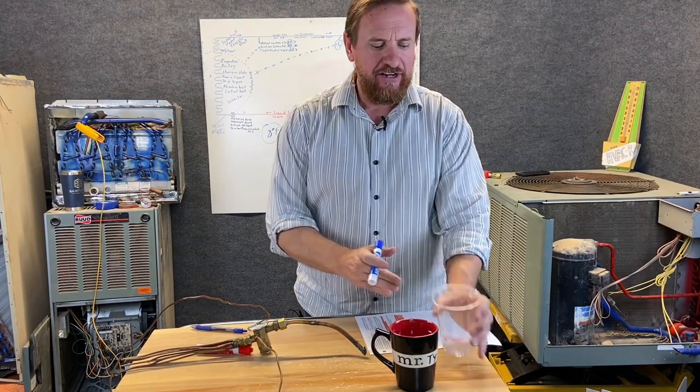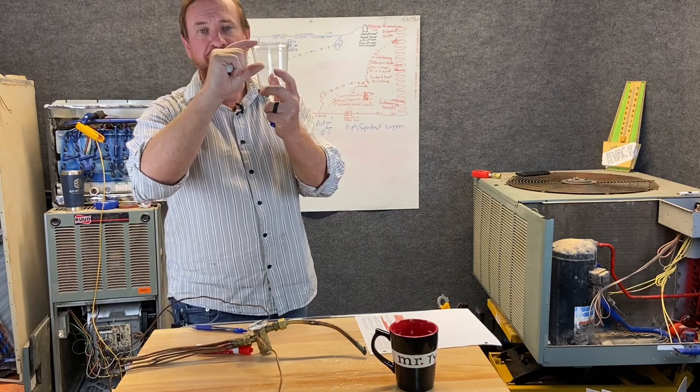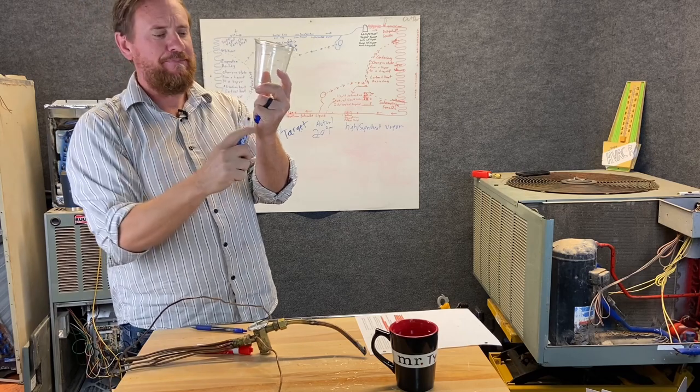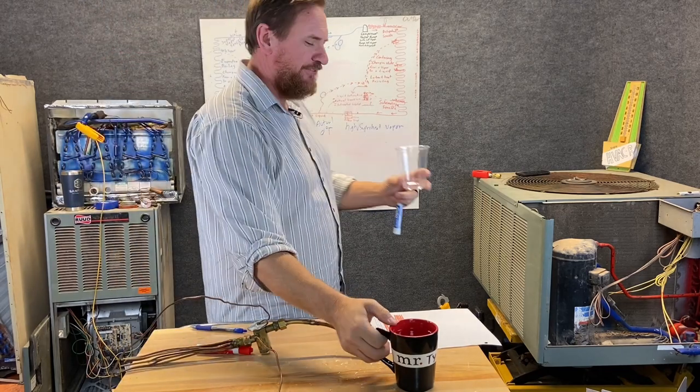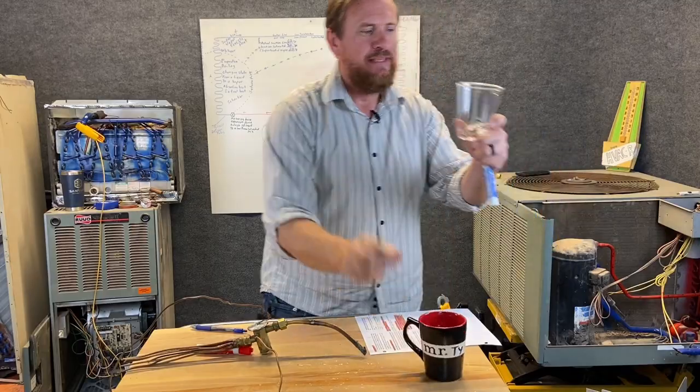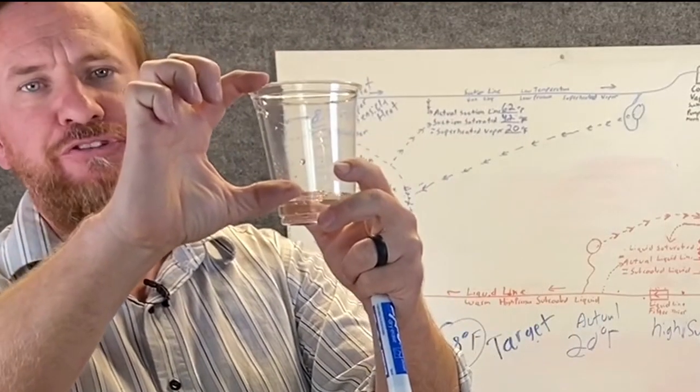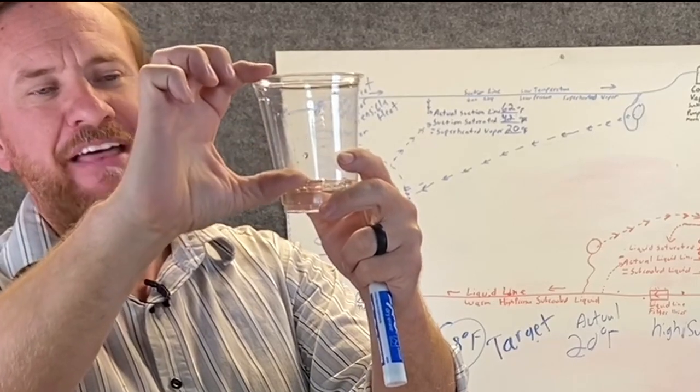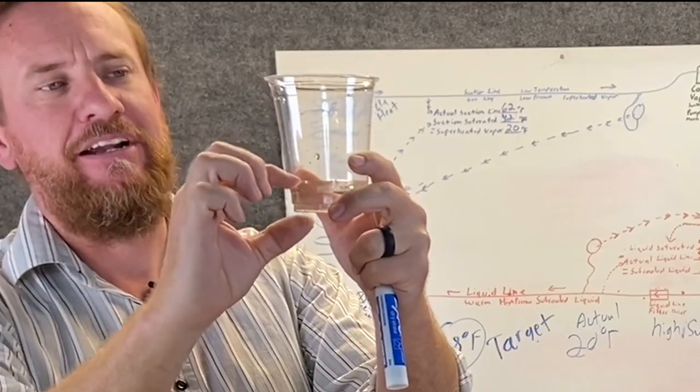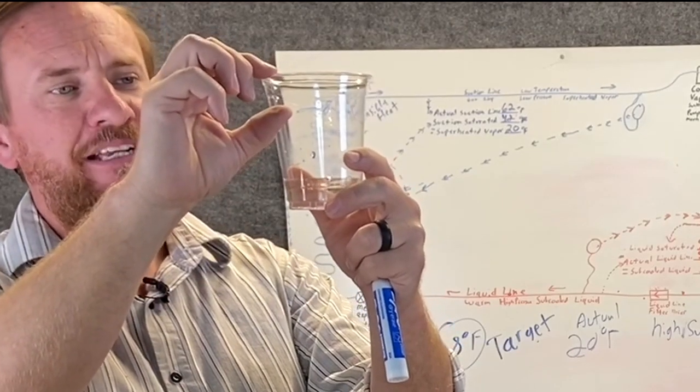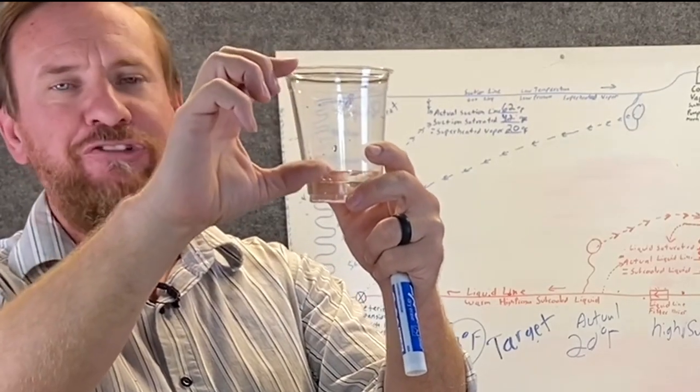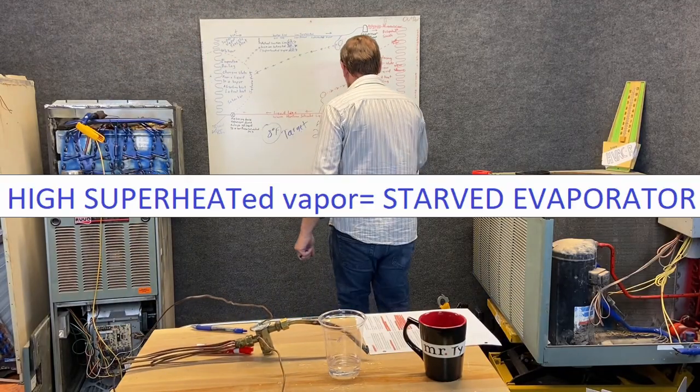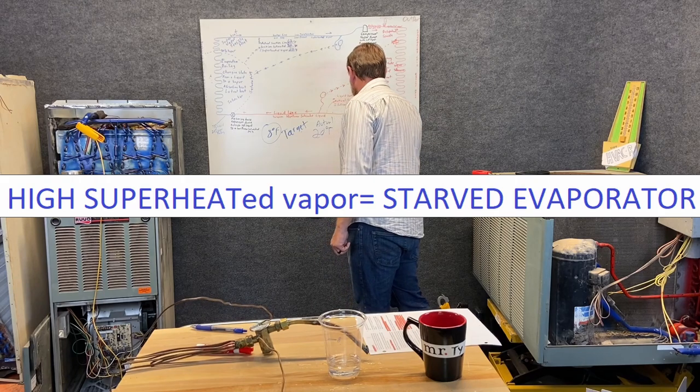High superheated vapor. So let's take a look on our cup idea again. Let's say we're talking about vapor. Let's say I want eight degrees of superheated vapor. But when we do the measurements, I have 20 degrees of superheated vapor. So I can only see the vapor and I want this much vapor, but I have that much vapor. That means I don't have enough liquid in here. So I want eight degrees of superheat, but I have 20 degrees of superheat. I have high superheated vapor. That means have a starved evaporator. High superheated vapor equals a starved evaporator.